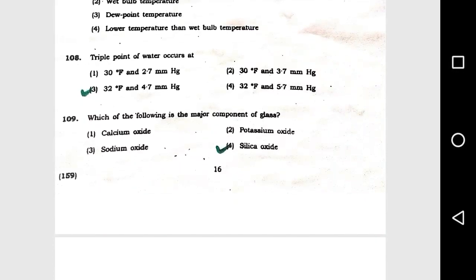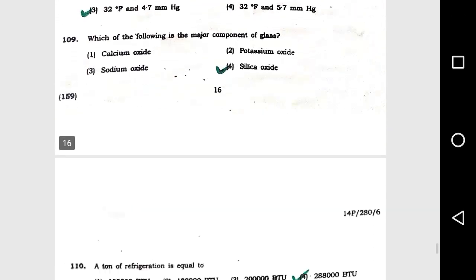Question number 108: Triple point of water occurs at option 3, 32 degrees Fahrenheit and 4.7 mm Hg. Question number 109: Which of the following is a major component of glass? Option 4, silica oxide.